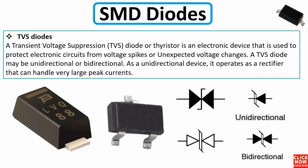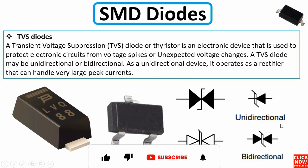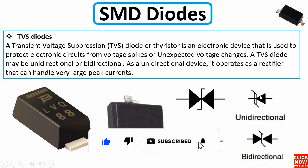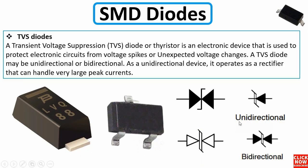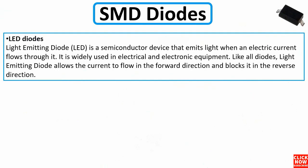A Transient Voltage Suppression (TVS) diode is an electronic device used to protect electronic circuits from voltage spikes or unexpected voltage changes. A TVS diode may be unidirectional or bidirectional, and operates as a rectifier that can handle very large currents. As you can see, it can have two or three terminals, and the TVS diode symbol can represent either a unidirectional or bidirectional device.